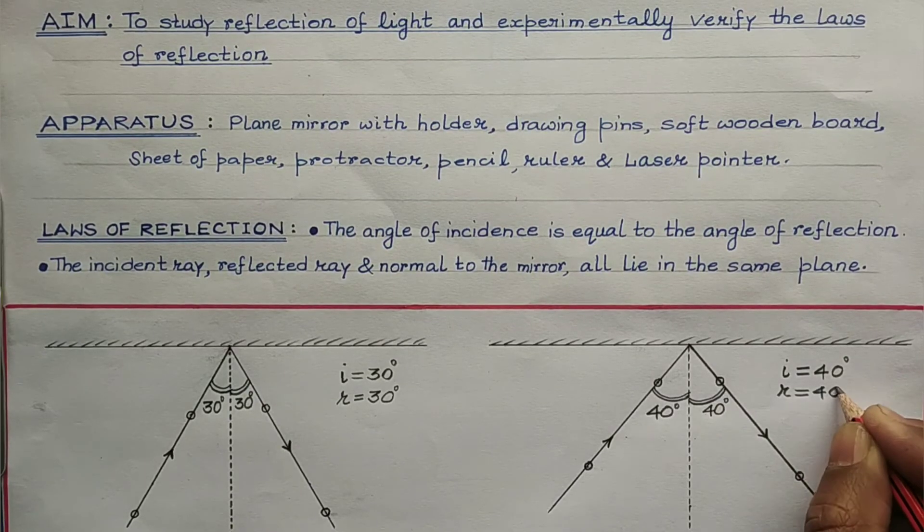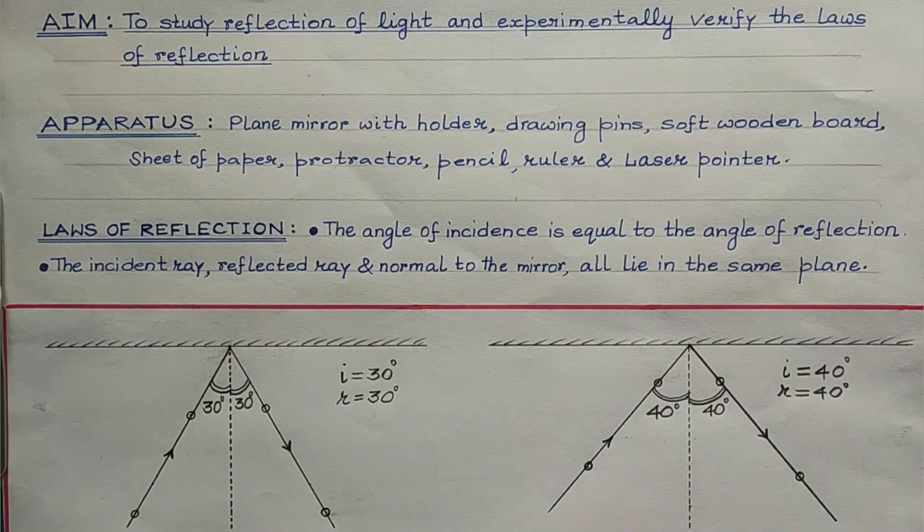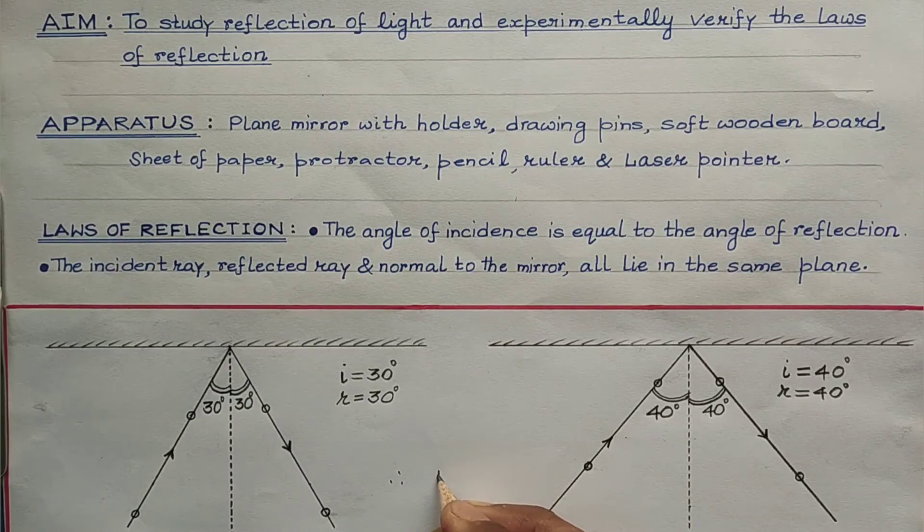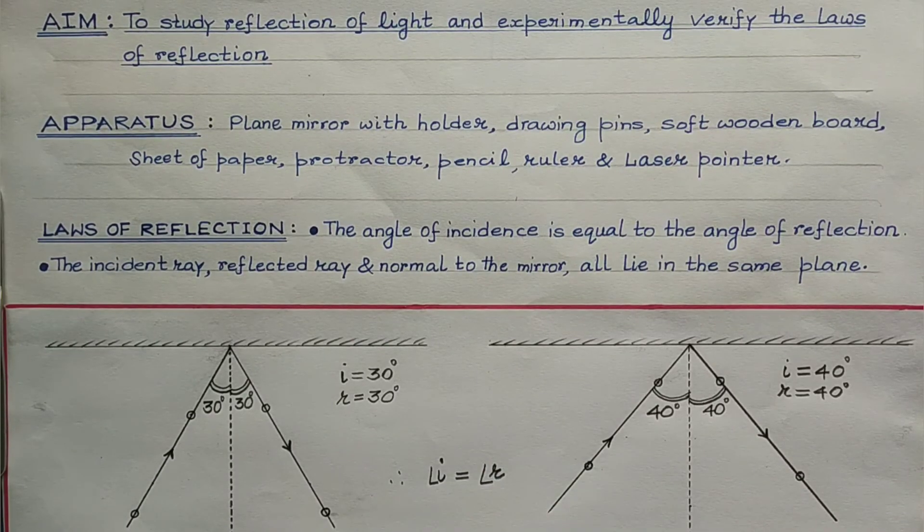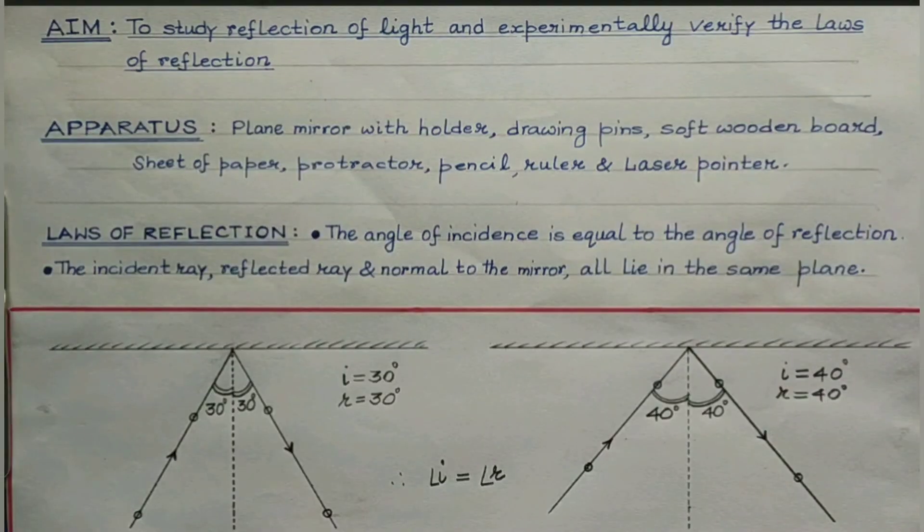So, for any angle of incidence, the angle of reflection must be exactly equal. So, this is the first law. Angle of incidence is equal to the angle of reflection and the incident ray, the reflected ray and the normal to the mirror all lie in the same plane. So, thus, laws of reflection is verified.